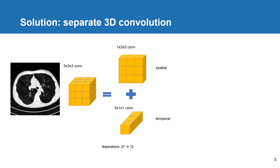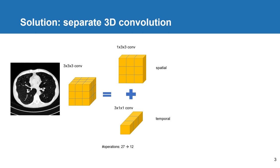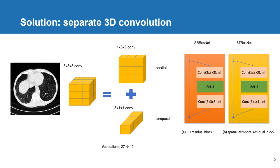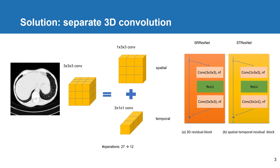We replaced the 3D kernel with our spatial and temporal kernel components in SR ResNet, which is a baseline super resolution approach that has proven to be very successful in many applications. This reduces the operations from 27 to 12, and we name our network ST ResNet.